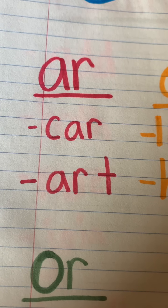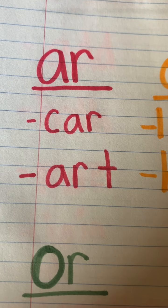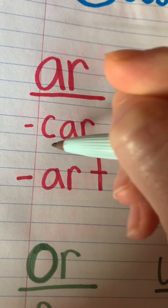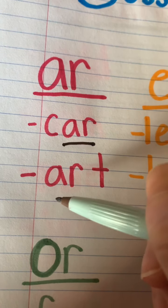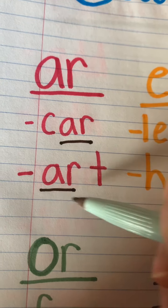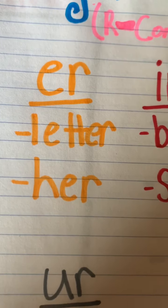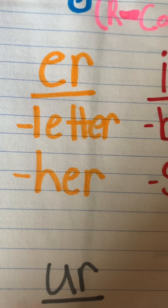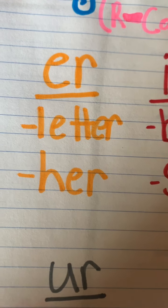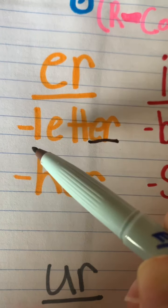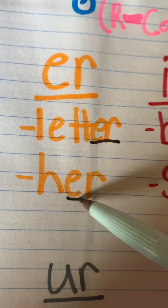We'll go over bossy R words, R-controlled words. Our first ones are AR. AR says R like in letter and her.